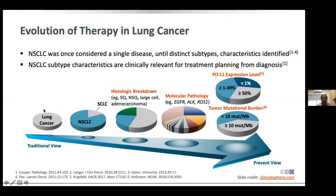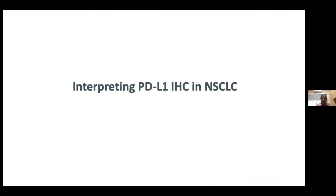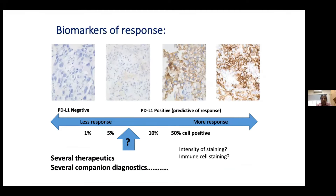Looking diagrammatically at the evolution of therapy in lung cancer: starting from lung cancer as one disease, we looked at histology — small cell and non-small cell — then molecular pathology and driver mutations, and today we are talking about immunotherapy. One of the important receptors we look at is PDL1 expression. The other is tumor mutation burden (TMB), which is still not in routine clinical practice, but PDL1 expression has come into routine clinical use.